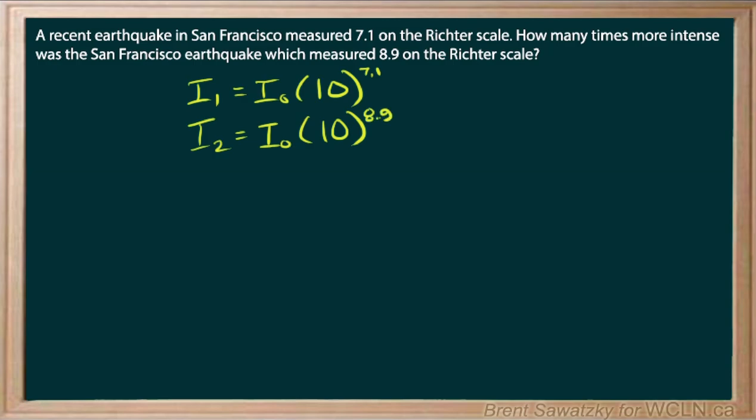And so what we're looking for is how many times more intense was the second one from the first. And so how many times more intense, so we'll take their intensities and we'll divide them.